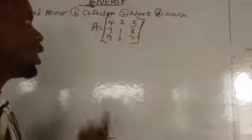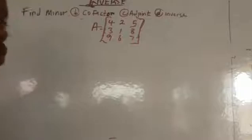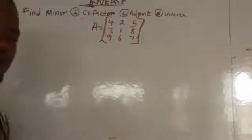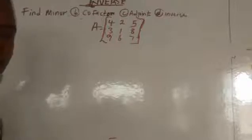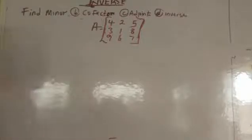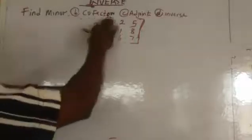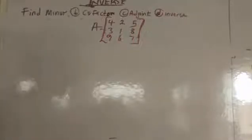In this video, we are going to be looking at inverse. In order to find inverse, we need to get to know some other aspects of a matrix that are very important. If you have to find minor, cofactor, and adjoint, then you can go for the inverse. So if you want to find inverse, you must have knowledge of adjoint, cofactor, and minor.